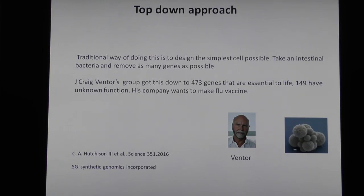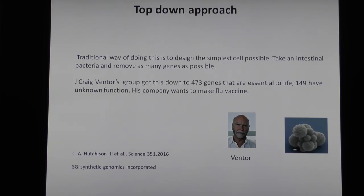You can see an application to medicine right away: 149 of those 473 genes are essential for life but of unknown function. This was published in 2016. Where it's going in the future, I don't know. One thing I'd like to see is simulating this on a supercomputer — follow every single molecule inside the cell. A cell is roughly 100 nanometers by 100 nanometers by 100 nanometers; that might fit on a supercomputer. Each one of those genes is making a protein, so you'd have to model at least a couple thousand chemicals — probably doable.